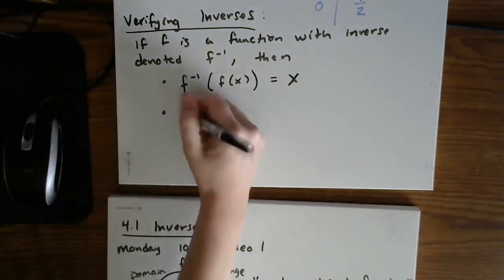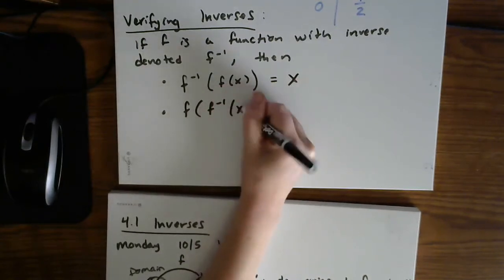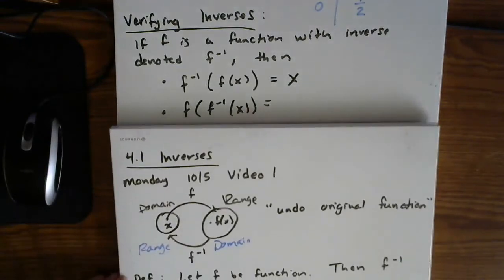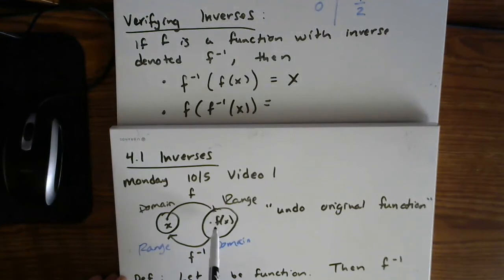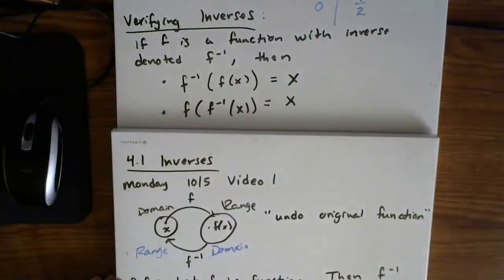The other one is if you were to reverse the order in which you compose. So again, it's this idea that inverses undo one another. So this one says let's say that I started here and I run it through the inverse first and then through f. Again, you should end up where you started.